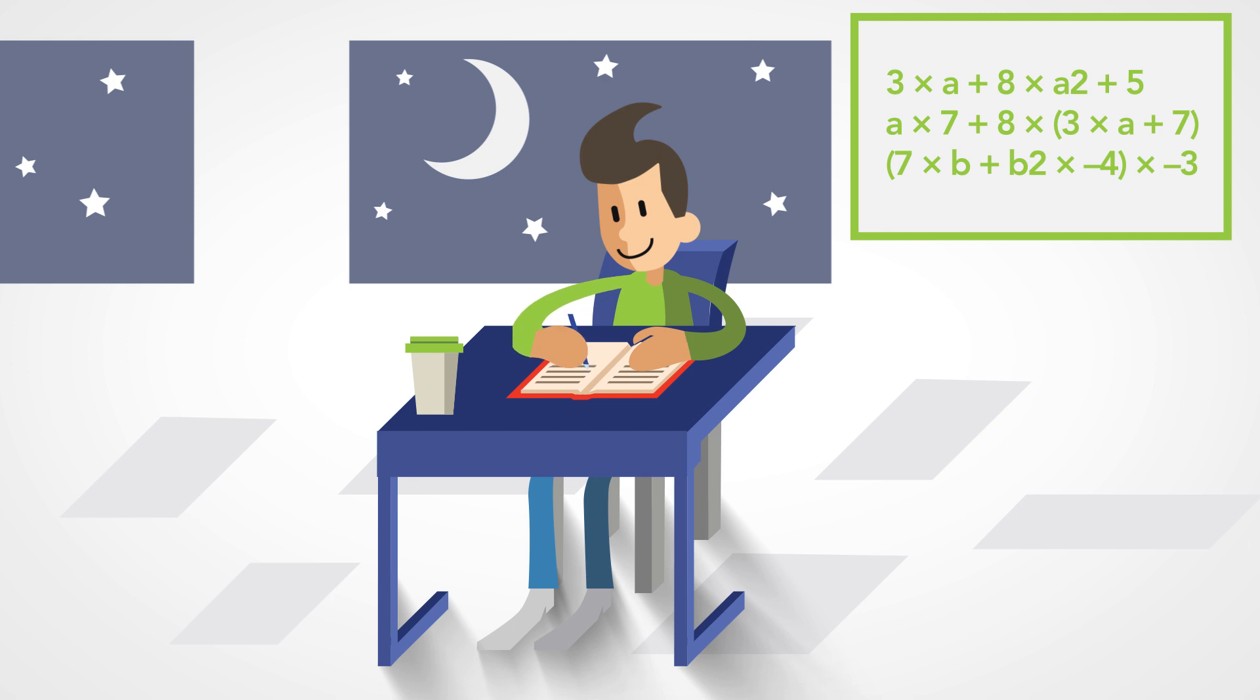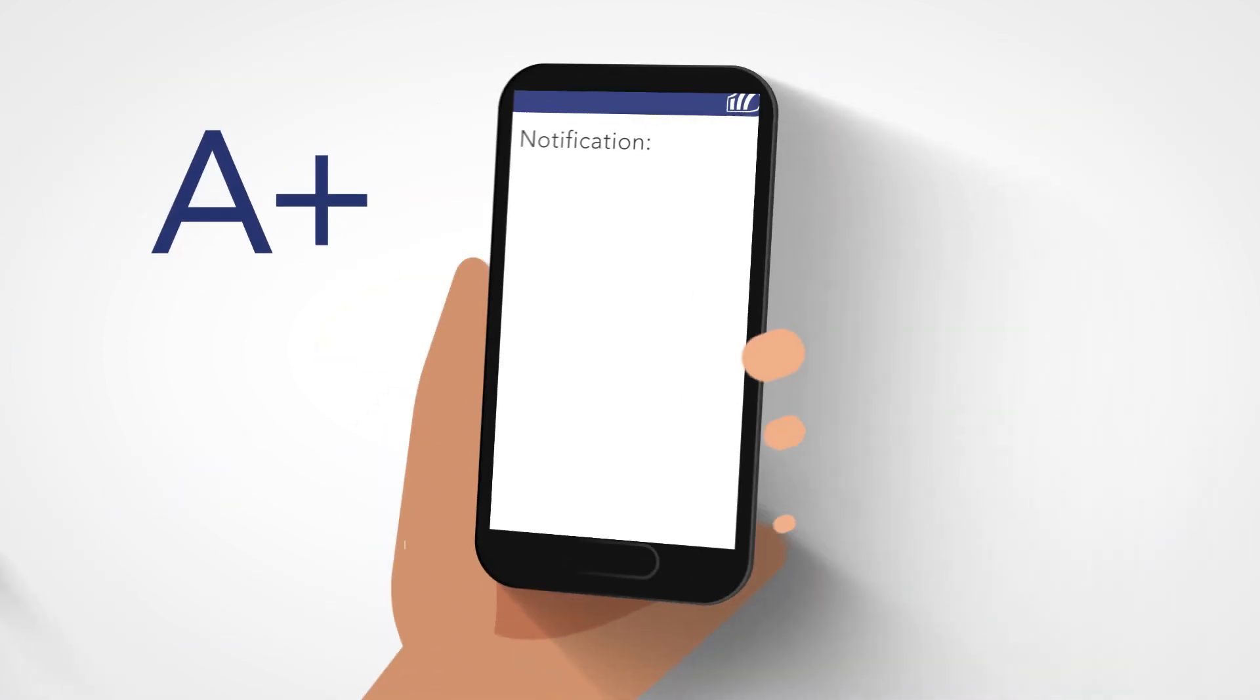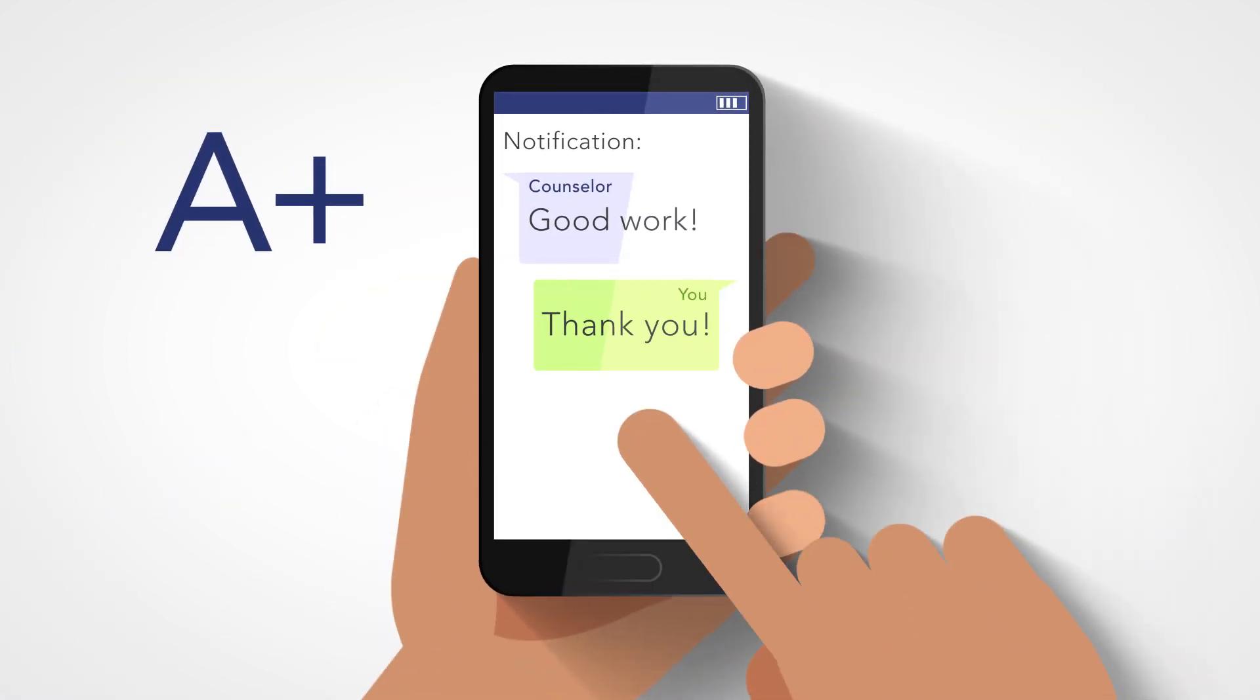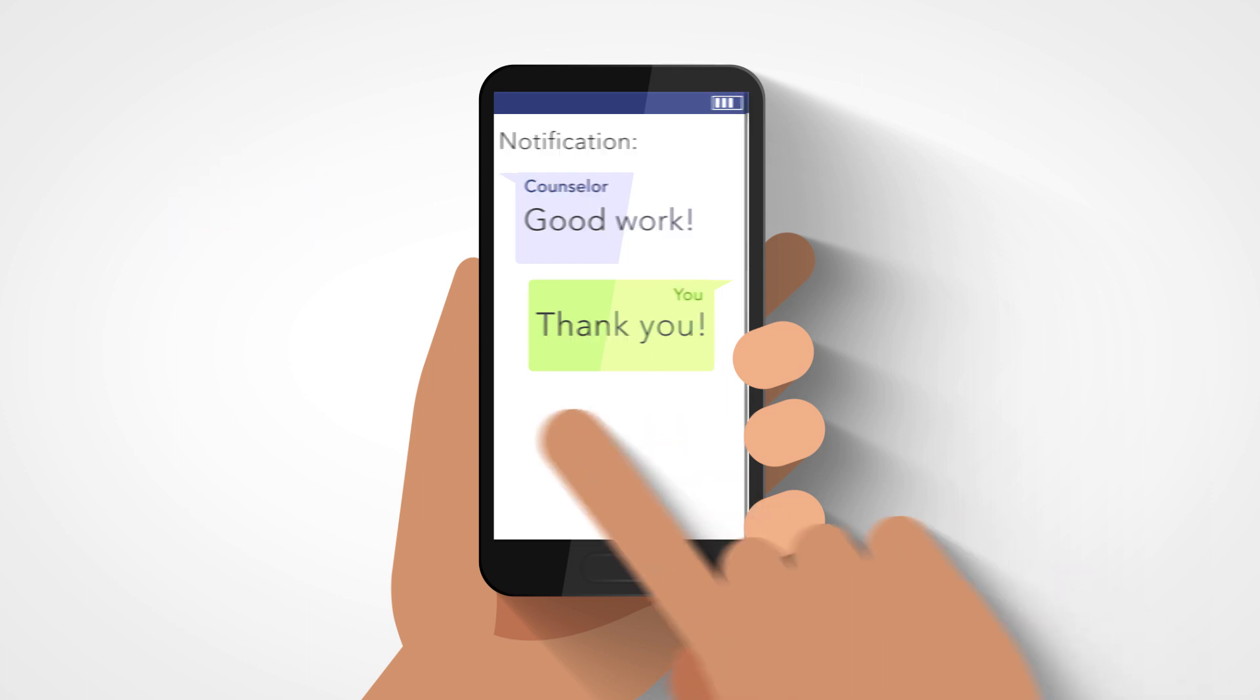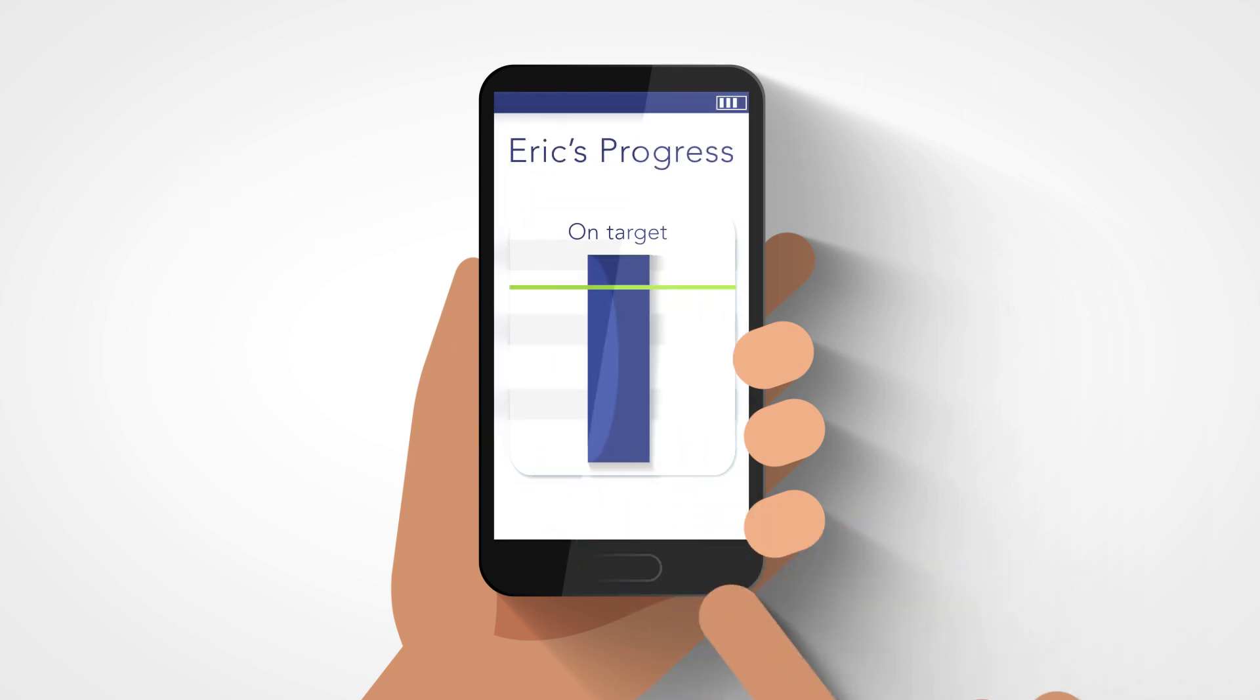Due to the extra help, Eric scores a good grade for Statistics 1. His student counselor compliments Eric for his efforts. Eric is able to check his overall progress and sees he's on target for obtaining his diploma on time.